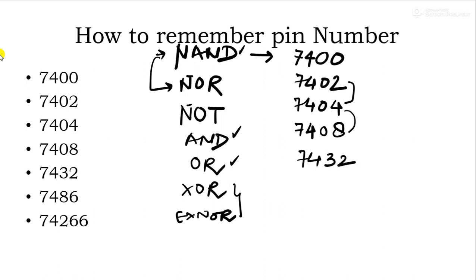Now pause. Then next, for XOR just remember 7486, and for XNOR 74, break this 8 into 2 into 6, so 2 and 6, and write this 6 as it is. So just see once again: start with 7400, add 2, 7402, then again add 2, 7404, then multiply this 2 and 4, 7408, then multiply this 4 and 8, that is 32, then 7486 and 74266.